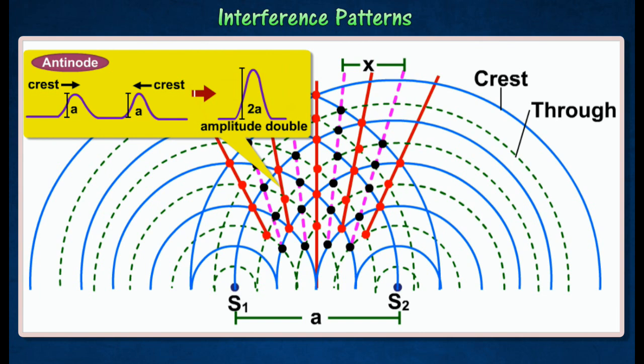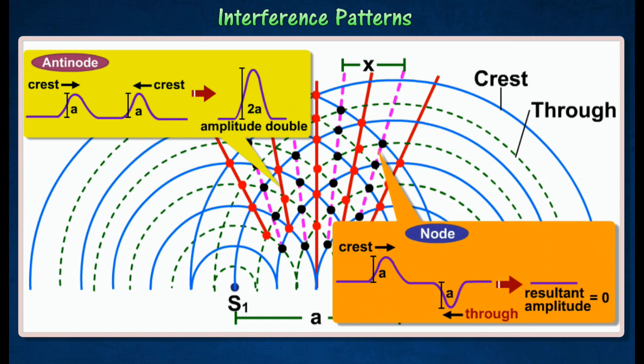Nodal lines consisting of points with zero displacement when destructive interference occurs. It's a line consisting entirely of nodes.